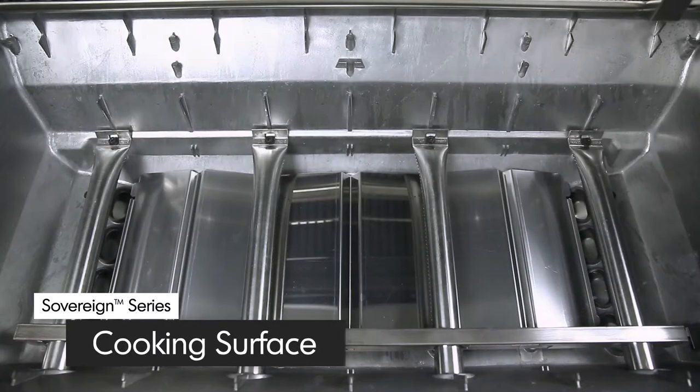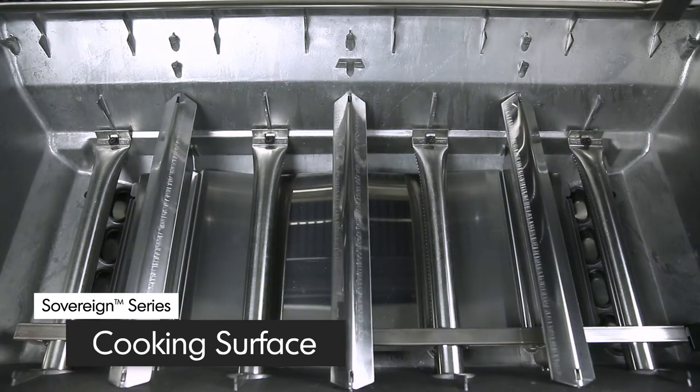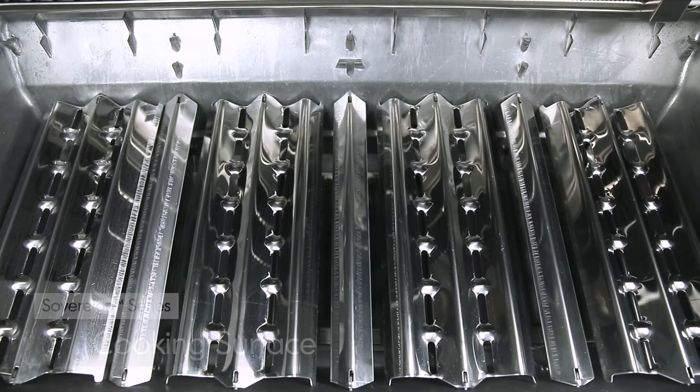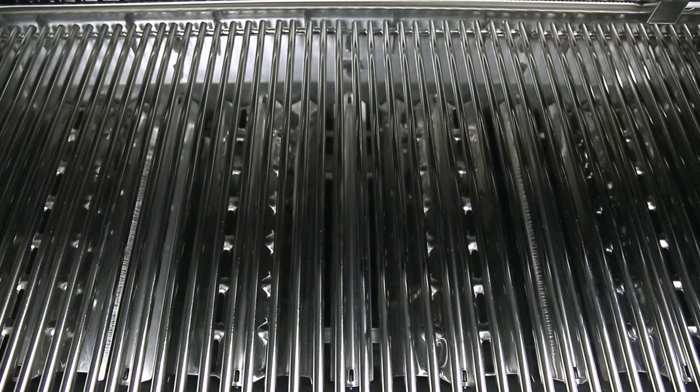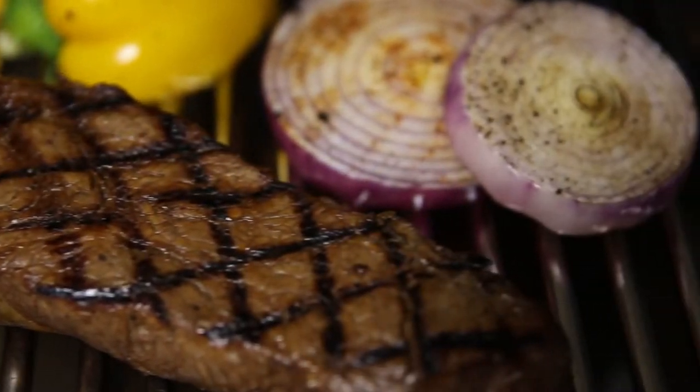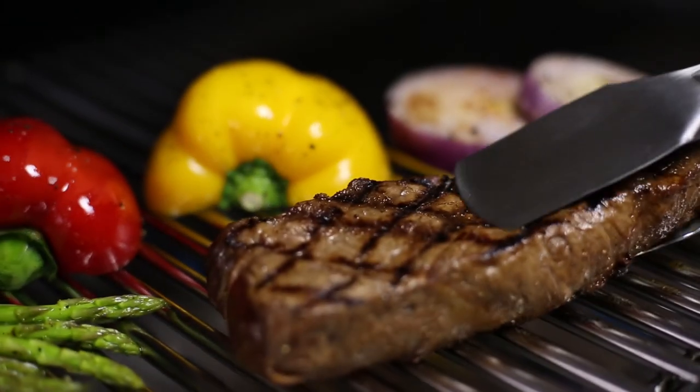When combining Broil King's dual-tube burners, flavor wave cooking system, and professional-grade cooking grids, you have the luxury of utilizing the entire cooking surface for high-heat searing.